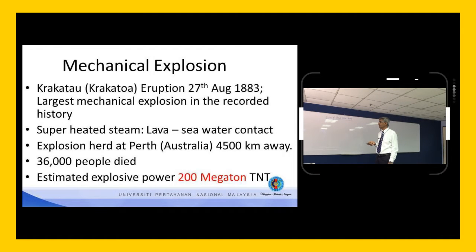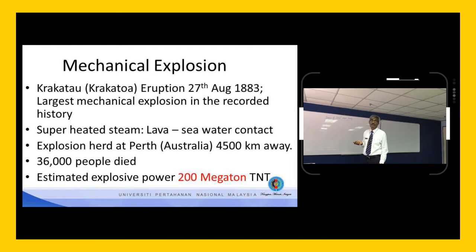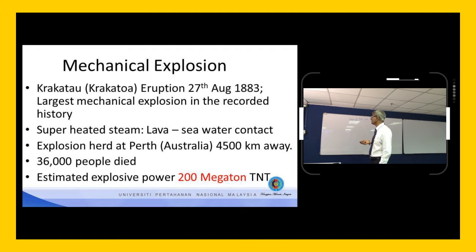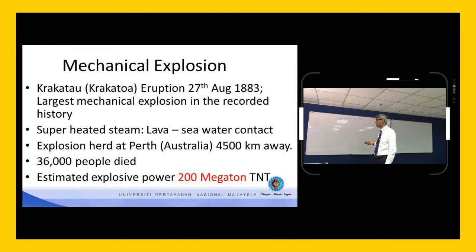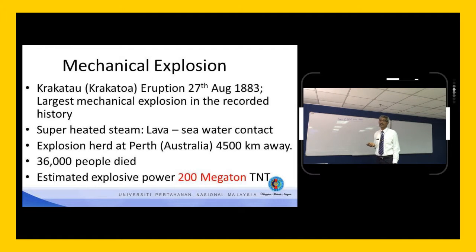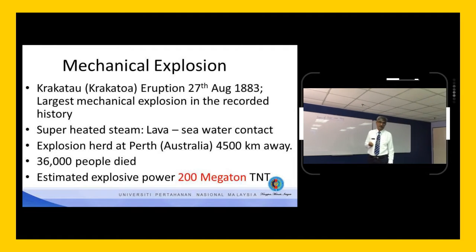At that time, more than 36,000 people died. There were many barometers which got damaged because weather registering — not forecasting, but registering — was affected by the sea waves. The estimated yield of this explosion was 200 megatons TNT equivalent.